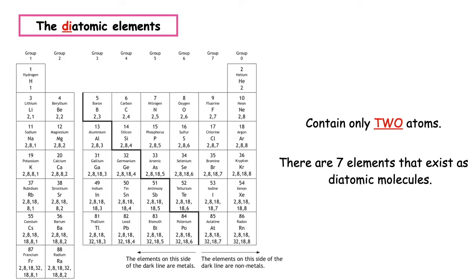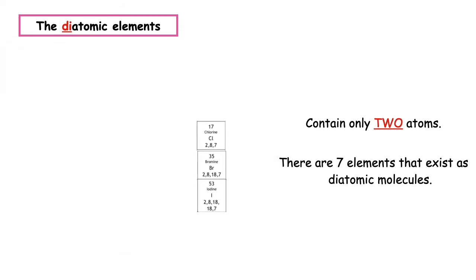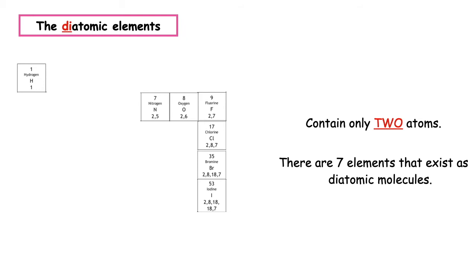Elements are made up of one type of atom. However, there are a select few elements which exist as diatomic elements, meaning they only contain two atoms. There are seven elements that exist as diatomic molecules: iodine, bromine, chlorine, fluorine, oxygen, nitrogen, and hydrogen. They always exist as two atoms chemically joined together via a covalent bond. It's really important that we know this because we will be expected to know the chemical formula and draw the covalent sharing diagrams for these diatomic elements.